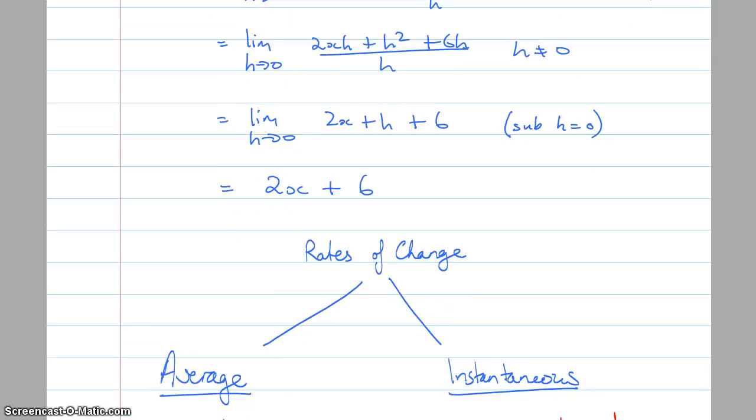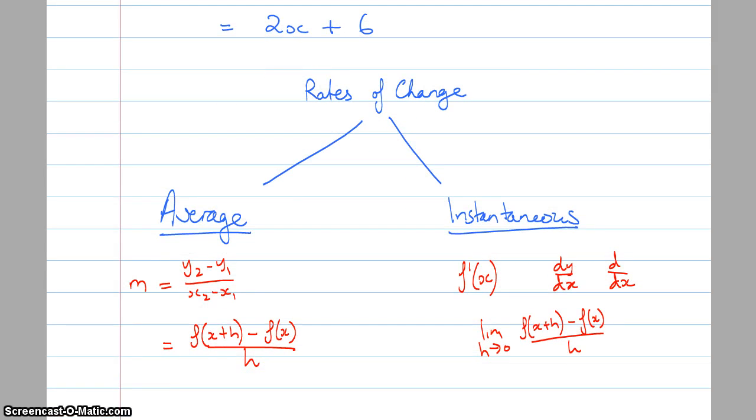So two things to remember when we're talking about rates of change. One is the average rate of change which is simply the gradient, this f of x plus h minus f of x over h. And then we've got the instantaneous rate of change as well. So this one's between two points, the average rate of change is between two points. Instantaneous rate of change is the rate of change at that particular point with respect to the next one.